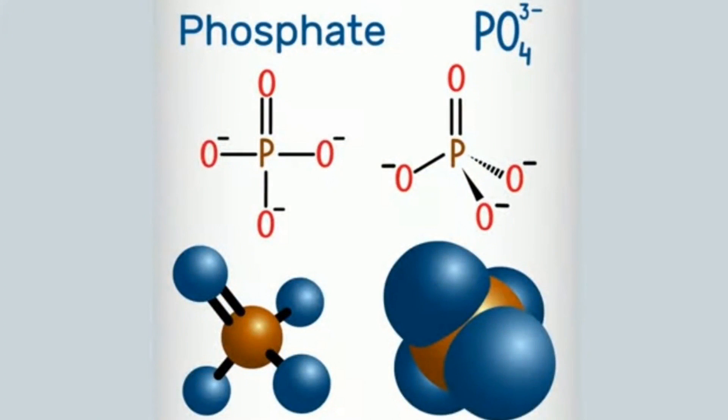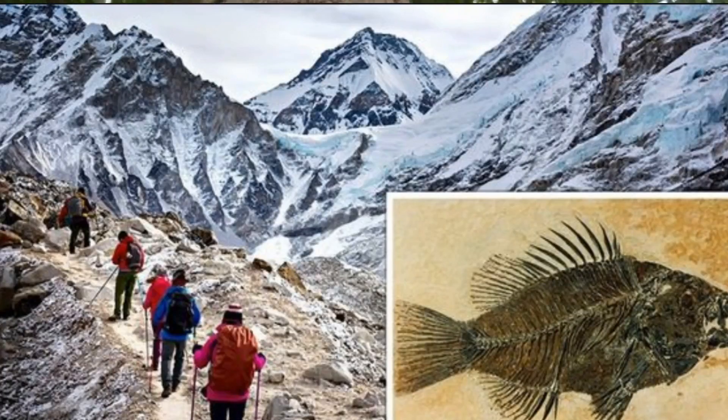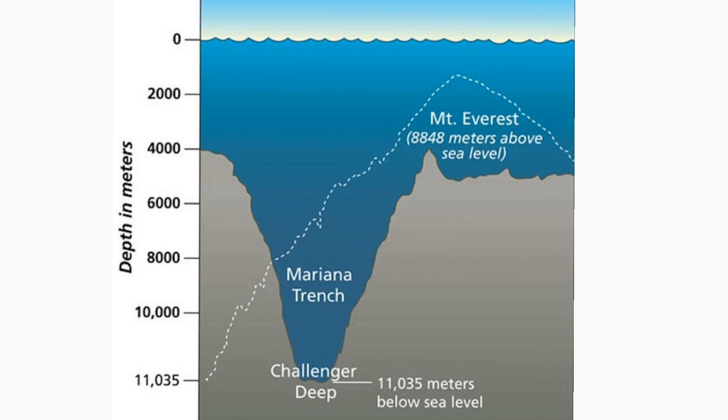Phosphorus and phosphates are one of the most important nutrients in the world for all living things. Not just your aquarium, but you, the trees, all the plants, all the fungi, all the bacteria — every single living thing on this planet has phosphorus in every single cell in its body. It is found all over this planet, at the top of Mount Everest and at the bottom of the Marianas Trench.